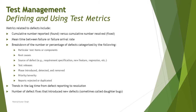Additional defect metrics include: trends in the lag time from defect reporting to resolution, and the number of defect fixes that introduce new defects — that is, regression failures where fixing one defect causes something else to stop working. These are some of the metrics a test manager can select to measure the defect dimension.